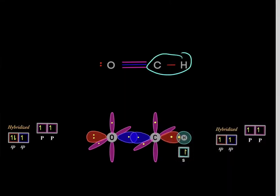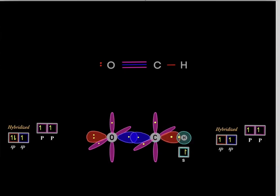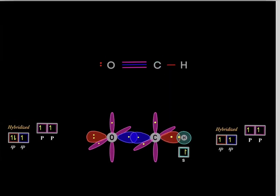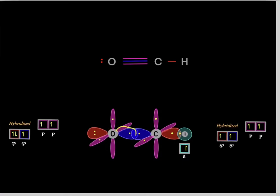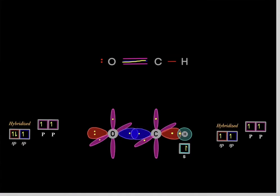What's going on in the covalent bonds? Hydrogen has s-orbitals. The carbon has an sp-hybridized orbital that overlaps with hydrogen's s-orbital, forming a covalent bond. For the triple bond, the first bond (sigma bond) comes from the oxygen's sp-hybridized orbital overlapping with the carbon's sp-hybridized orbital.